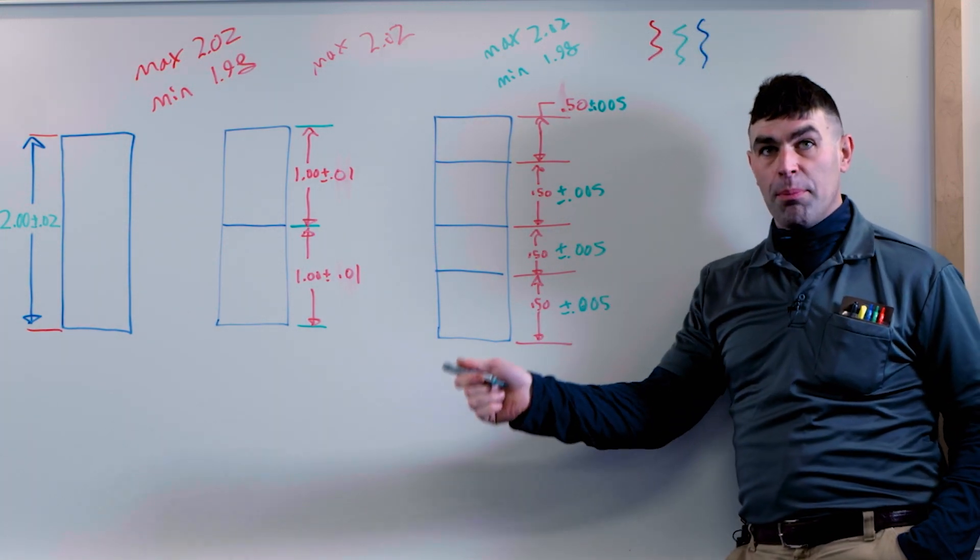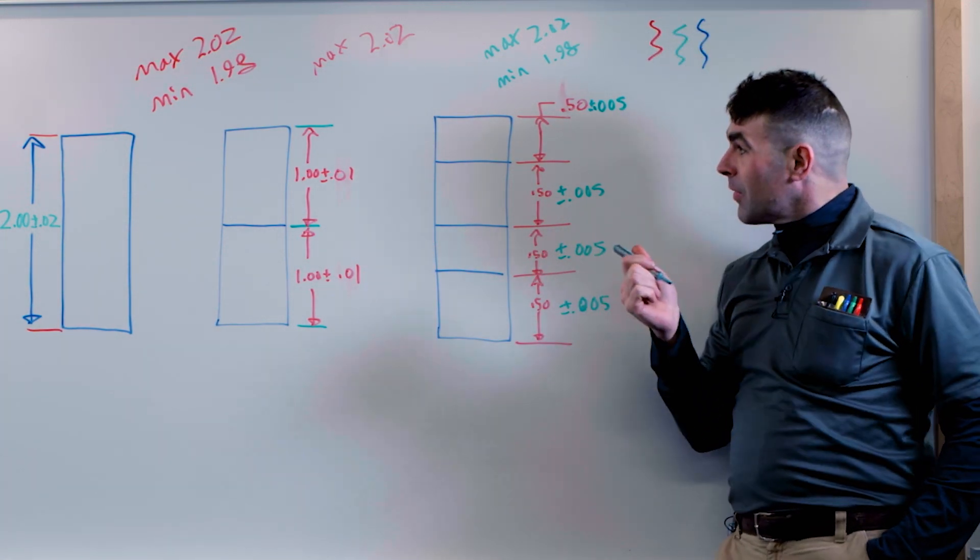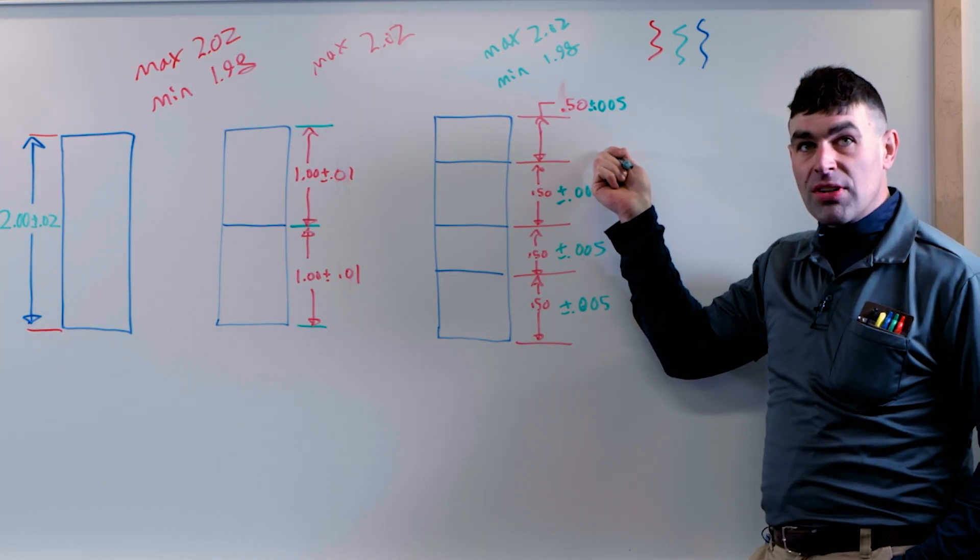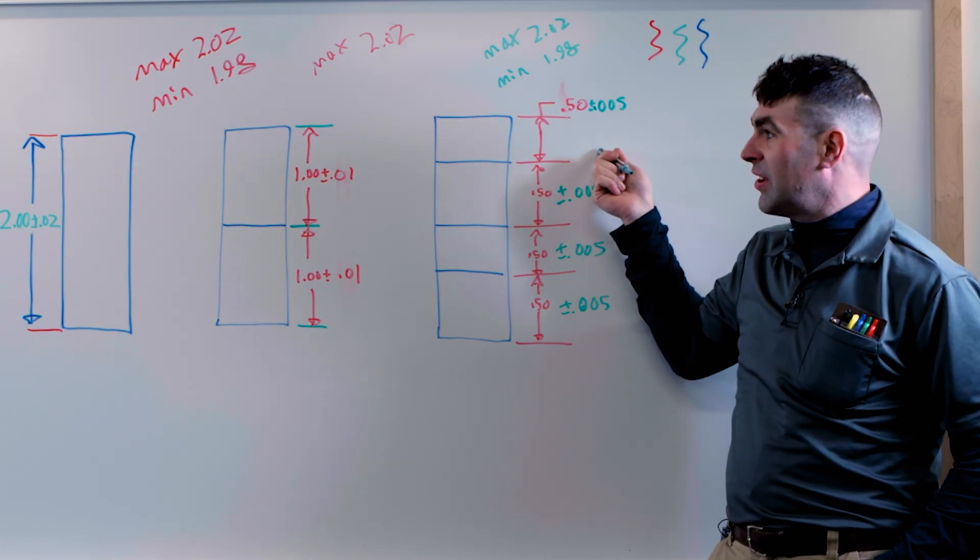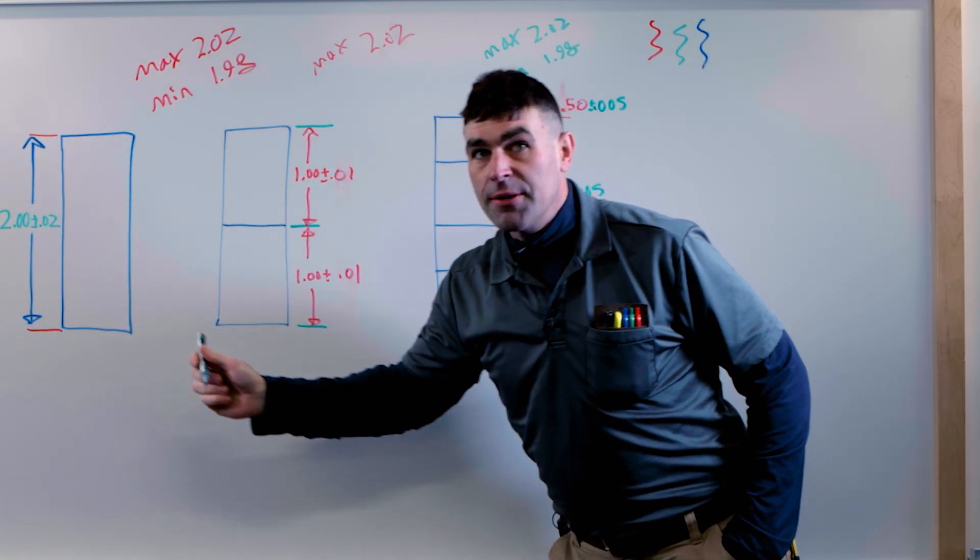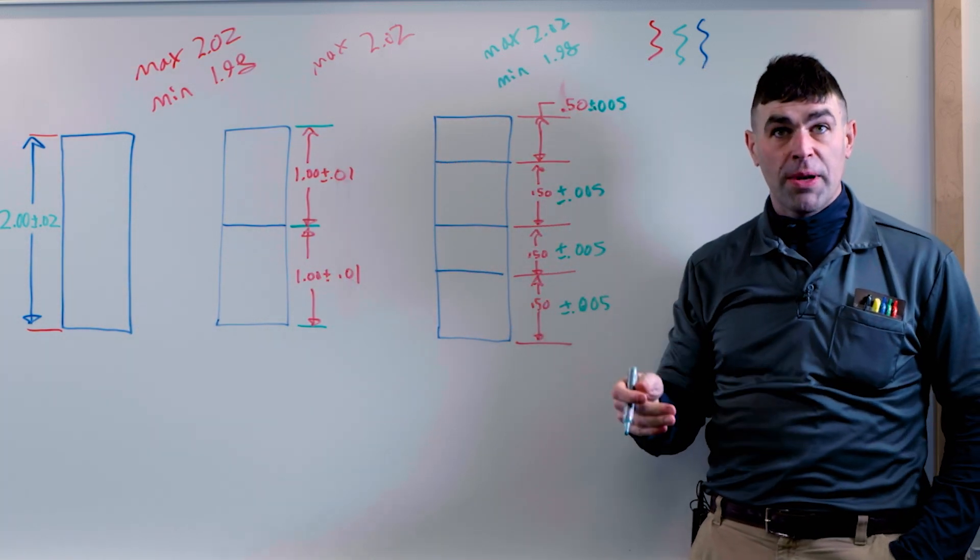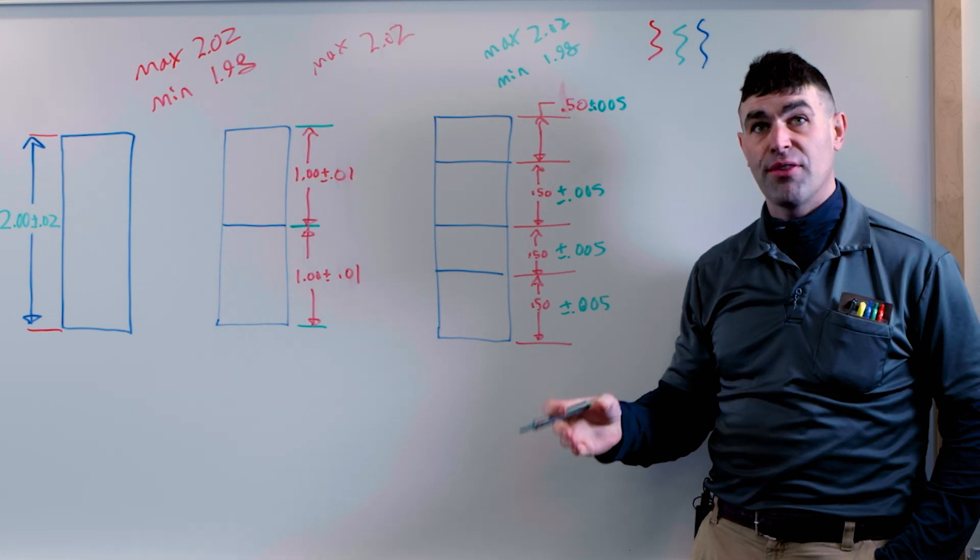But from the first example to the third example, this block is much more difficult to produce. We're plus or minus 5 thousandths or a total of 10. The first block is plus or minus 20, so a 40 thousandths variation.